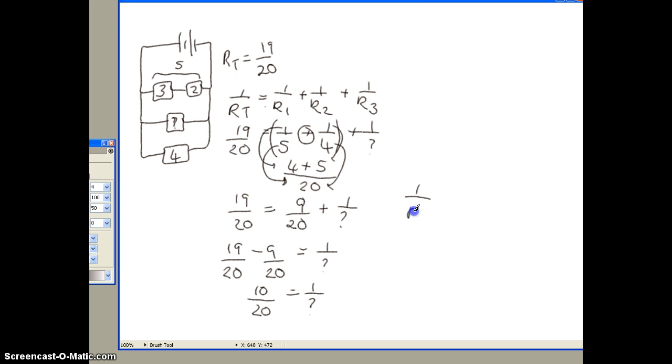So, we've got 1 over R3 is equal to 10 over 20. So, therefore, if we invert it or take the reciprocal and have R3 over 1 instead, then we must do the same to this one. Cancel these down and we get 2 over 1, which equals to 2 ohms. And that's your answer.